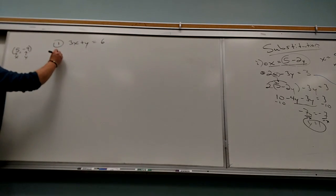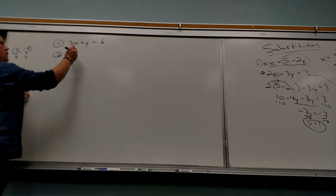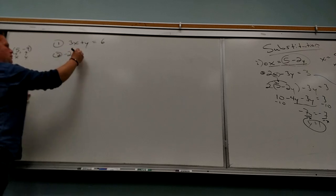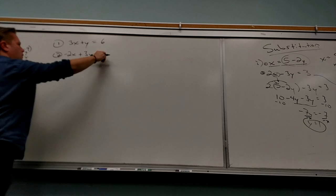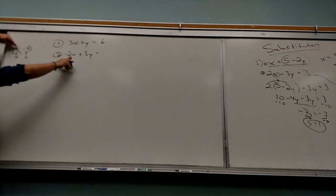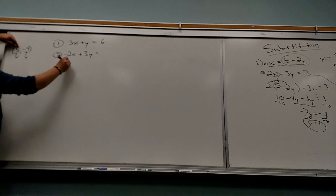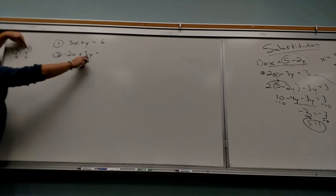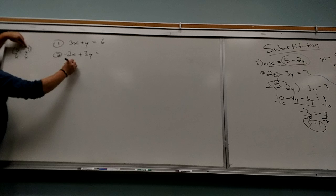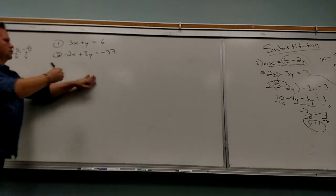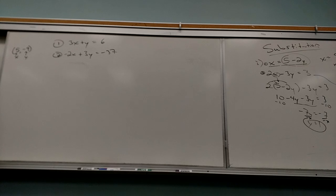Now let's make a second equation. Let's say negative 2x plus 3y. X is 5, so this is negative 10. Negative 9 times 3 is negative 27. So I put negative 37 on the right side. It doesn't matter what the first two coefficients are — you just plug in and find the equals side.